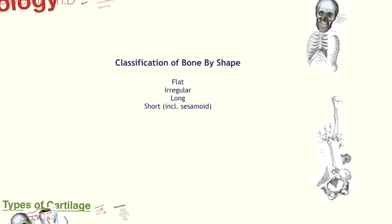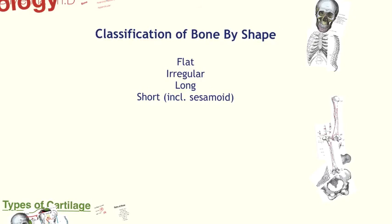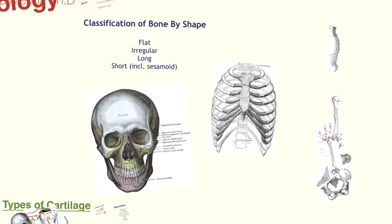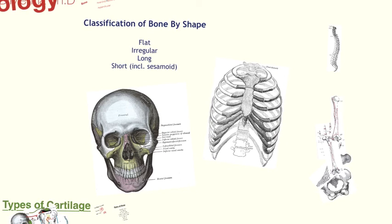The next way we classify bone is based on shape, because all bones are shaped a little bit differently from each other, but they can be grouped into four main categories: flat bones, irregular bones, long bones, and short bones. Some folks classify sesamoid bones into a fifth category, but for this lesson, we'll group them in with the short bones. Examples of flat bones include members from the skull, the rib cage, the sternum and manubrium — these are bones that are thin or flat, some with a slight curve.